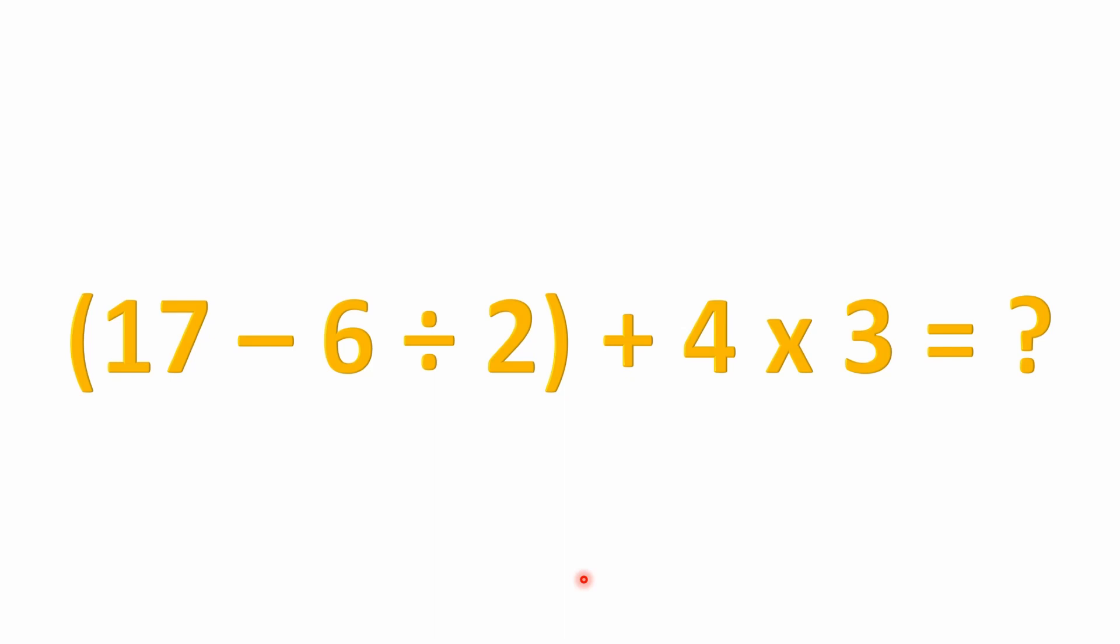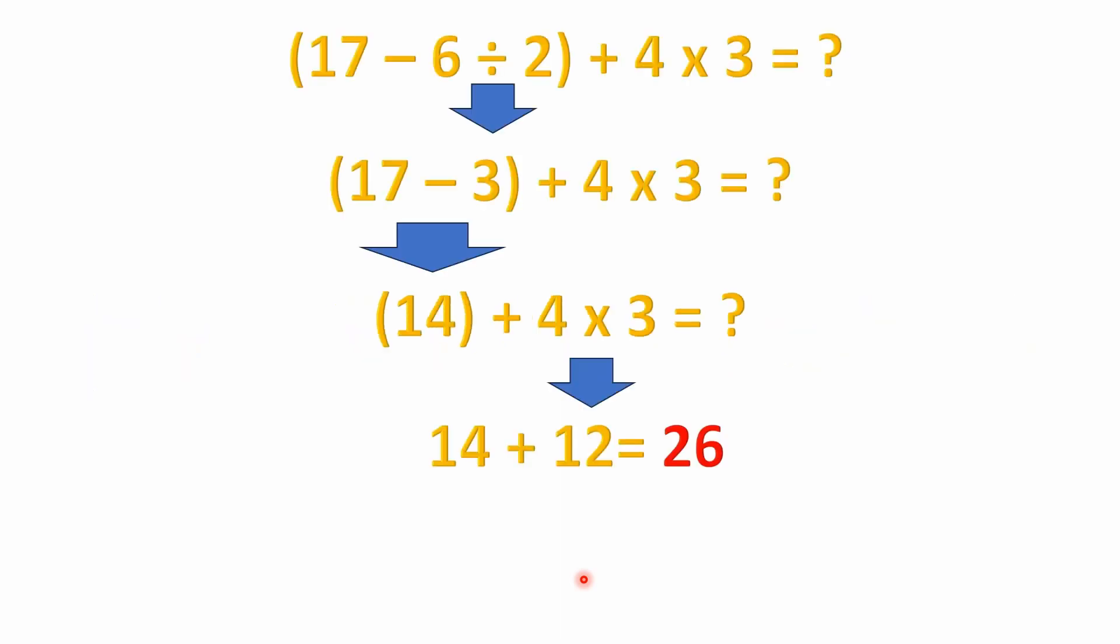We've got 17 minus 6 divided by 2. All of that is in parentheses, then we're adding it to 4 times 3. So what is the answer? All right, well,